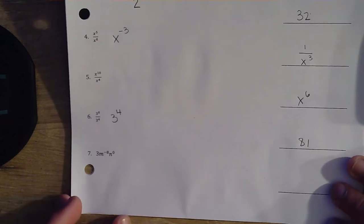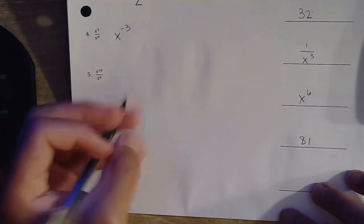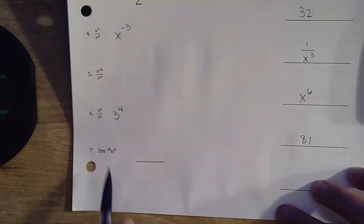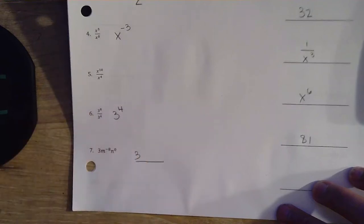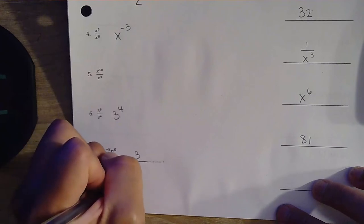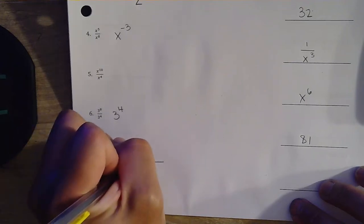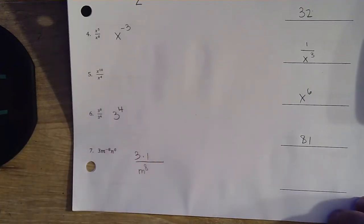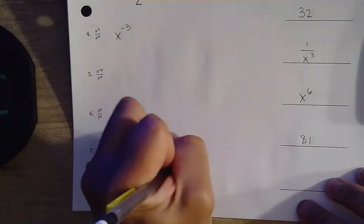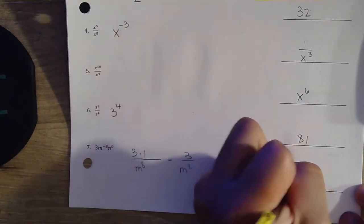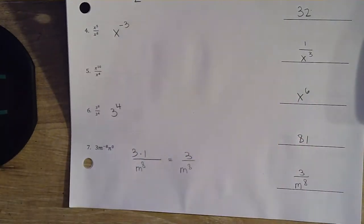Question number 7. This is where we start to get a little bit more involved, but just take it one at a time. Anytime you see a negative exponent, it's probably a good idea to make a fraction. The 3 stays on top — no negative exponent. m to the negative 8th power is a negative exponent, so we go ahead and bring it down to m to the positive 8th power. n to the 0 power is just 1, multiplied by 1. So our final answer is 3 over m to the 8th power.